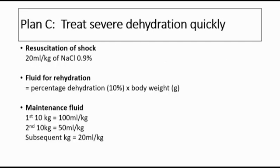For Plan C in severe dehydration, there are three groups of fluid to give. First, resuscitate the shock with 20 ml per kg of 0.9% sodium chloride, repeated if necessary until the patient is out of shock. Second, give fluid for rehydration over 4 to 6 hours, calculated as 10% times body weight in grams. Third, give maintenance fluid using the Holliday-Segar formula: 100 ml per kg for the first 10 kg, 50 ml per kg for the next 10 kg, and 20 ml per kg for each subsequent kg — given over 24 hours.